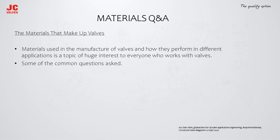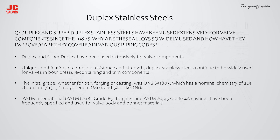Duplex and super duplex stainless steels have been used extensively for valve components since the 1980s. Because of their unique combination of corrosion resistance and strength, they continue to be widely used for both pressure-containing and trim components. The oil and gas industry embraced duplex stainless steels largely because of improved resistance to chloride stress cracking in temperatures above 60°C, where austenitic stainless steels are susceptible. They are used in ball, butterfly, check, gate, and globe valves across desalination, chemical processing, and pulp and paper industries. The initial grade was UNS S31803, with a nominal chemistry of 22% chromium, 3% molybdenum, and 5% nickel.